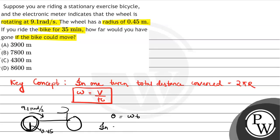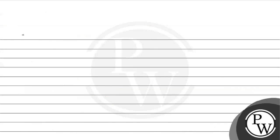In one second, theta equals 9.1 radians per second into one second, so theta equals 9.1 radians. So in one second we're covering this angular displacement.